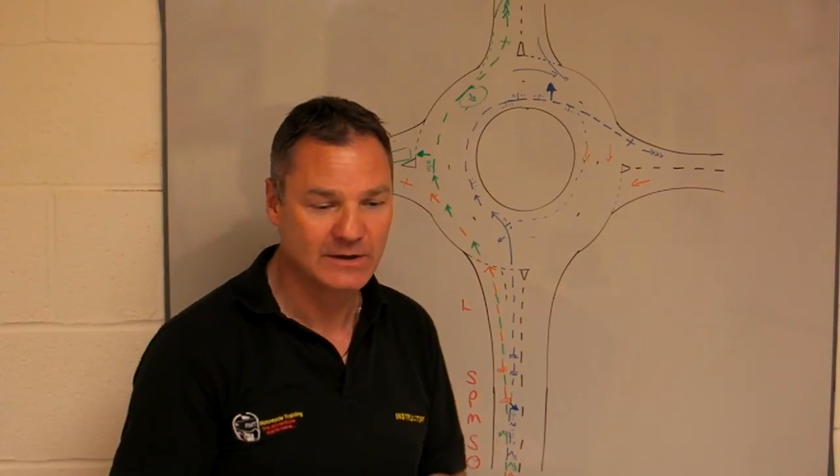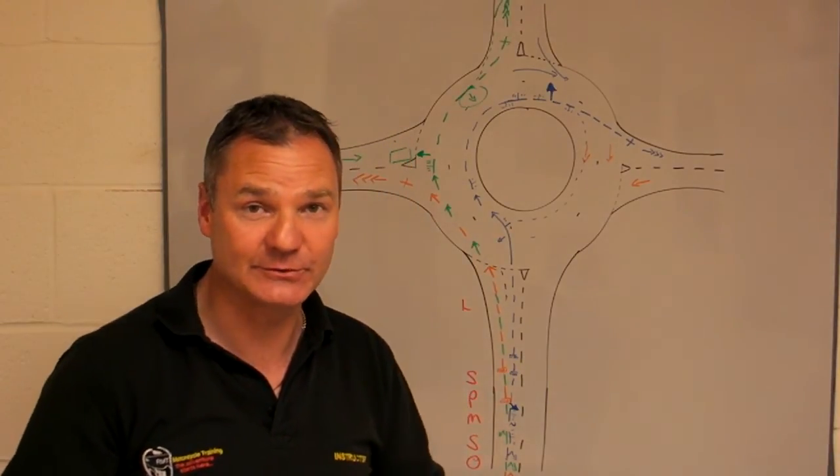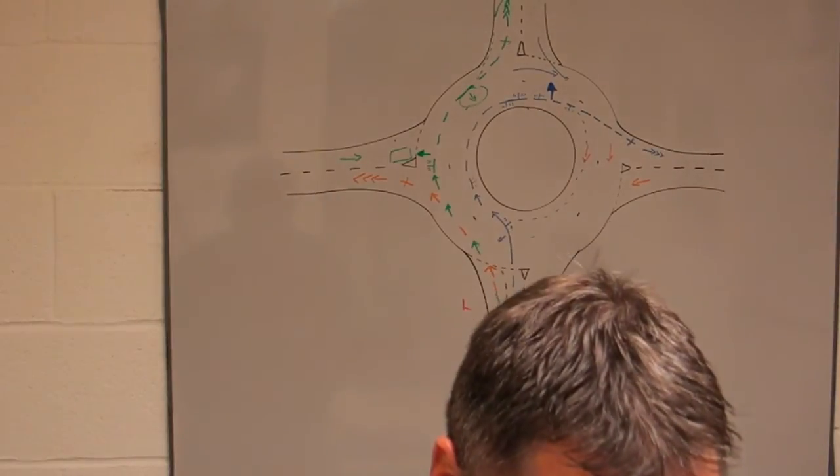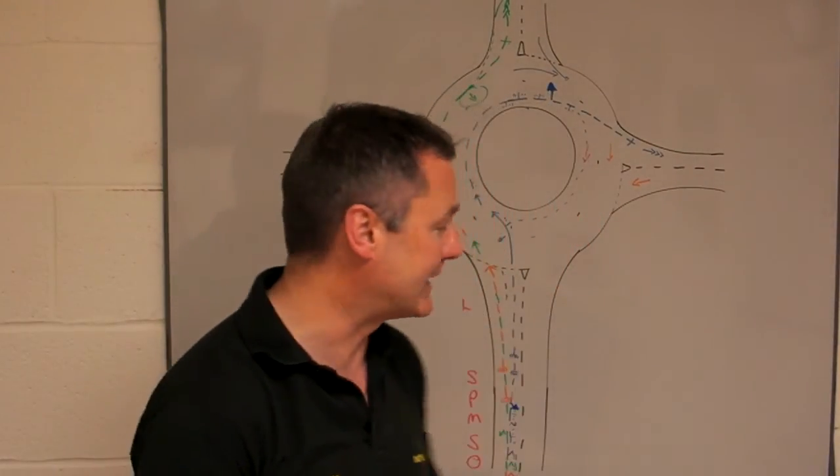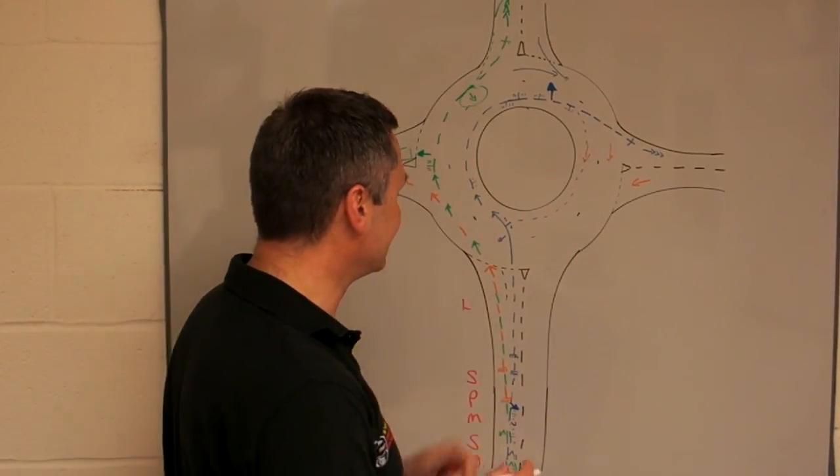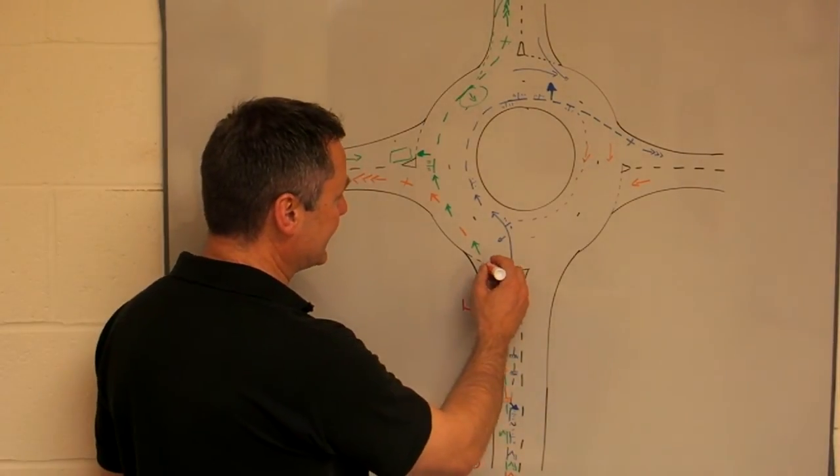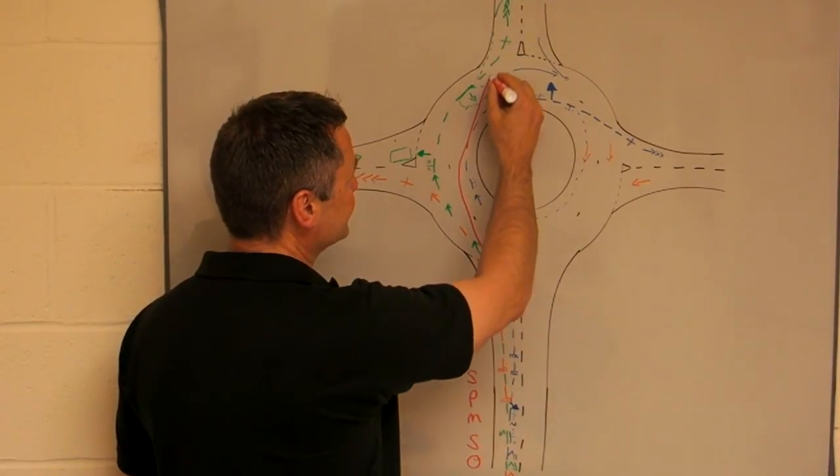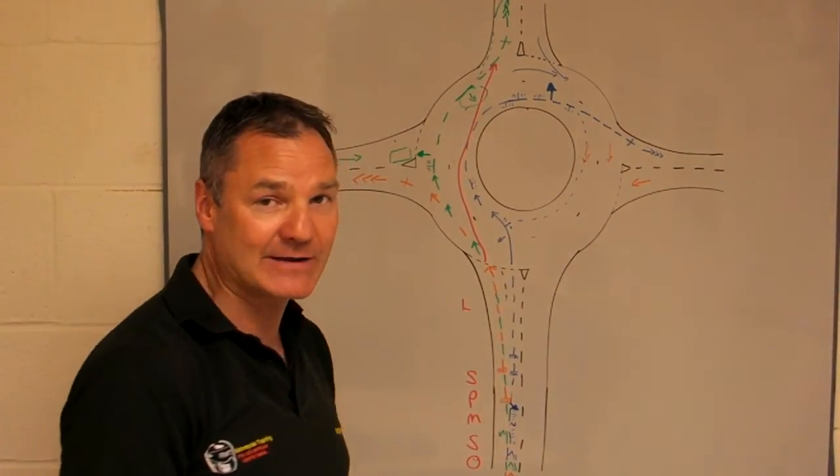A few things to note and a few things that we shouldn't do in the roundabout, and we'll mark that by using a red pen. A dangerous thing to do in the roundabout would be to go from here and go straight across and straight line the roundabout.